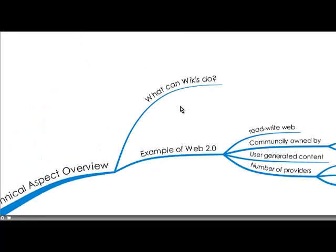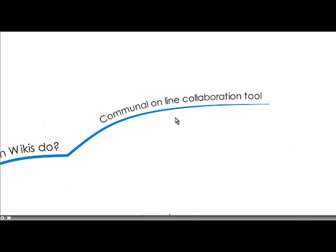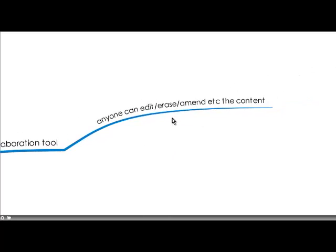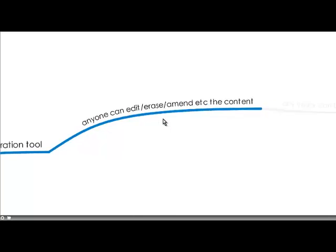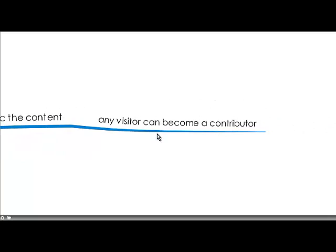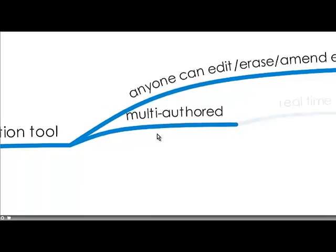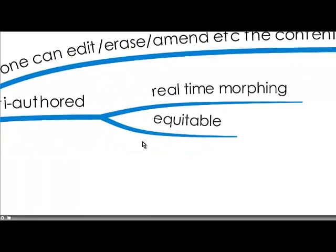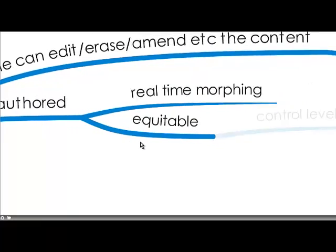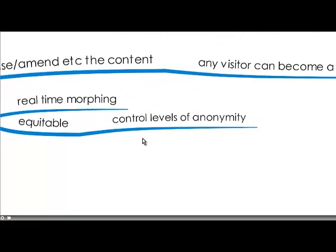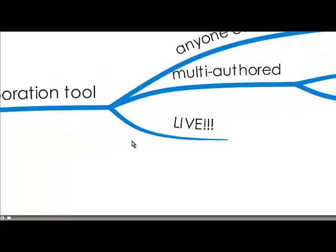So what can wikis actually do? Well, they're a communal online collaboration tool, and anyone with the link or access to that wiki can edit, erase, or amend the content — any visitor can contribute. So it's really a multi-author document that's morphing in real time, and it's equitable because it controls the level of anonymity.